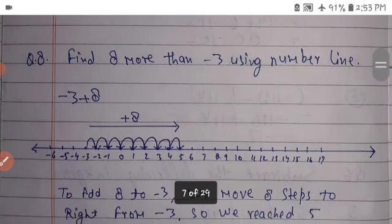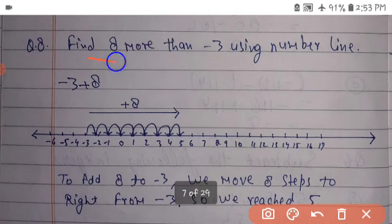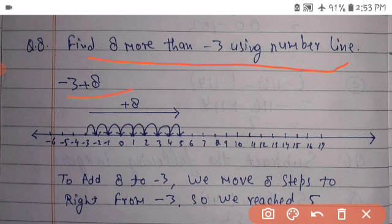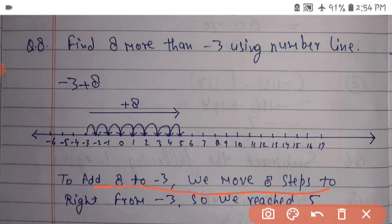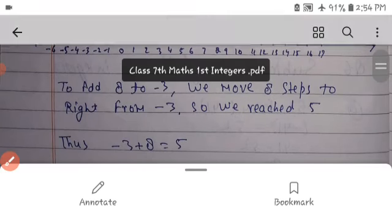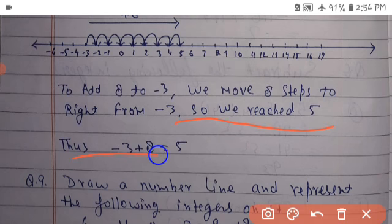Find 8 more than minus 3 using the number line. Starting at minus 3, we move 8 steps to the right — 1, 2, 3, 4, 5, 6, 7, 8 — and we reach 5. Thus, minus 3 plus 8 is equal to 5.